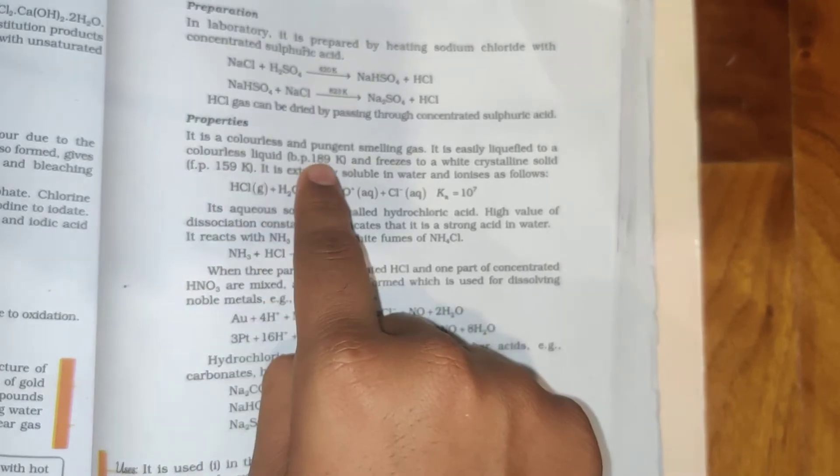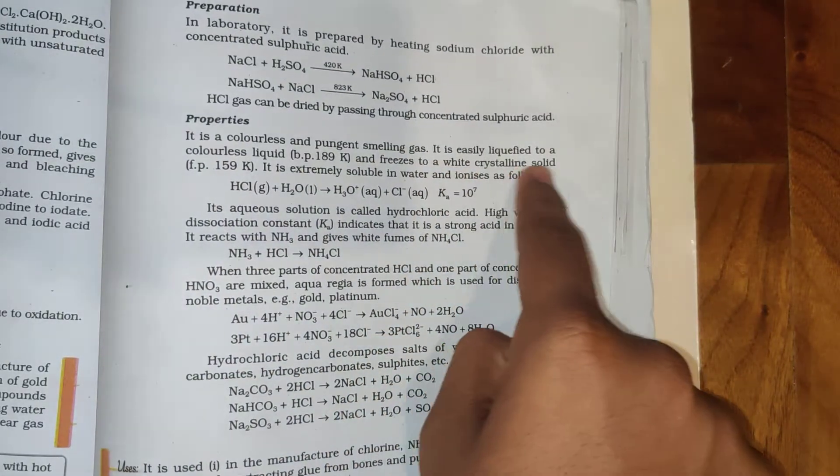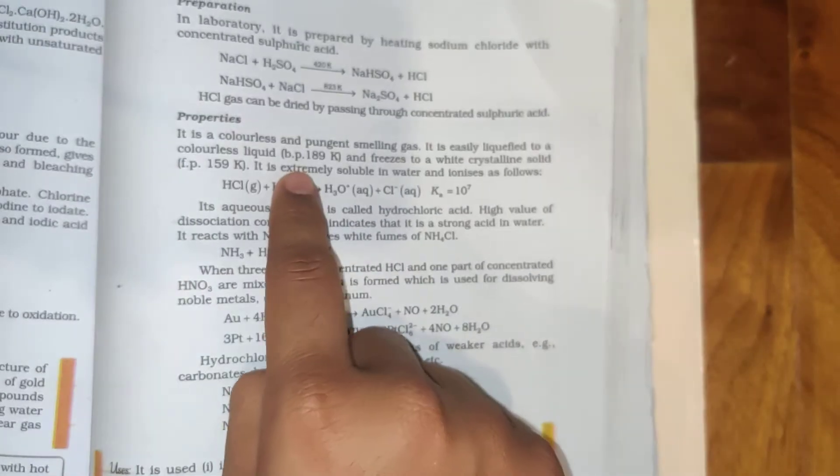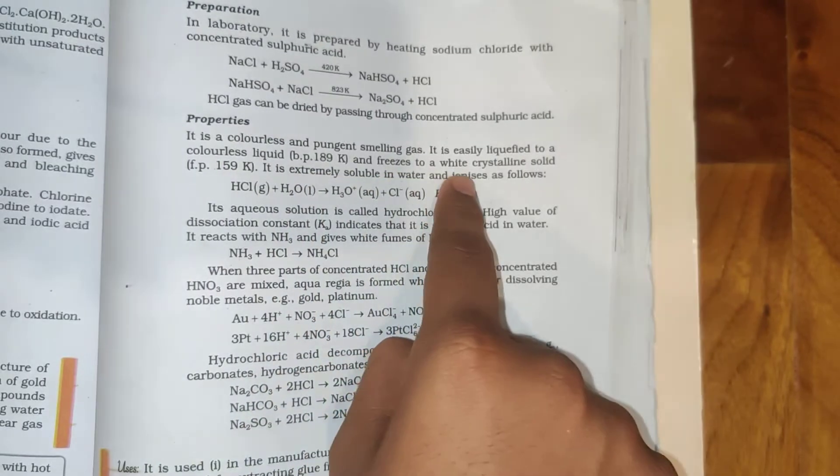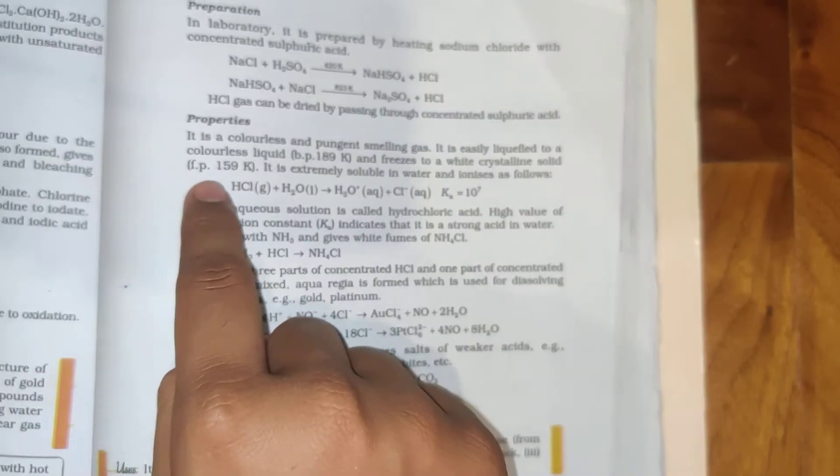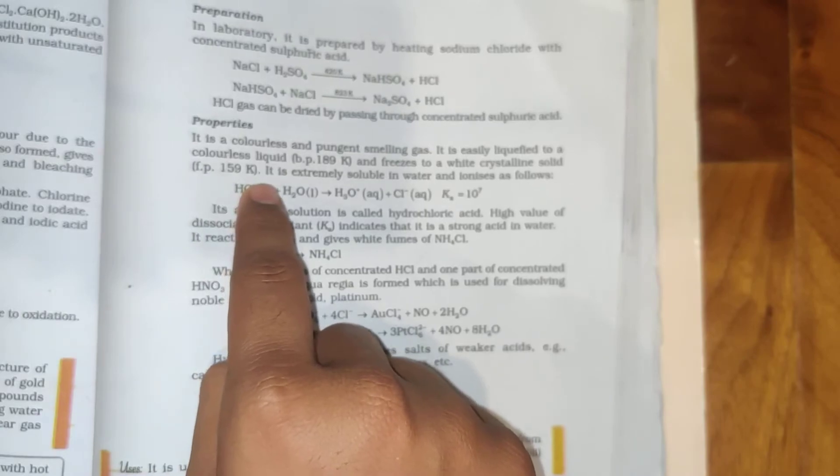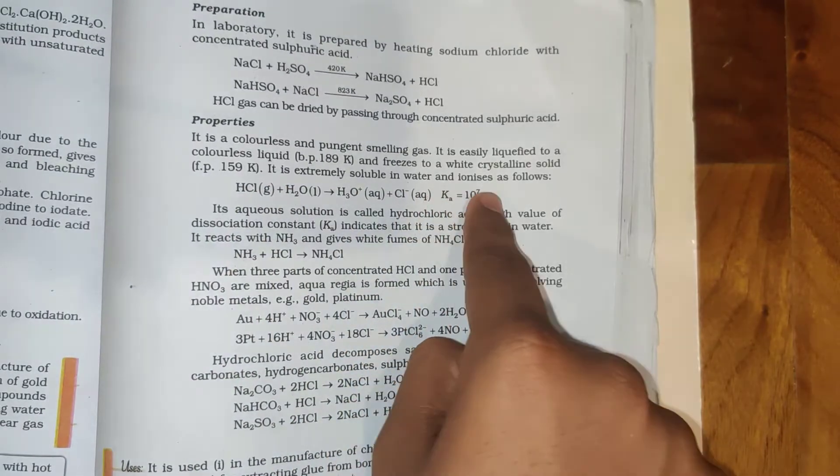Properties: It is a colorless and pungent smelling gas. It is easily liquefied to a colorless liquid boiling 0.189K and freezes to a white crystalline solid freezing 0.159K. It is extremely soluble in water and ionizes as follows.